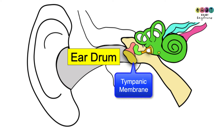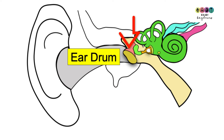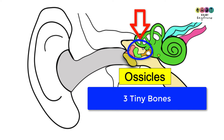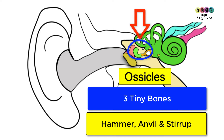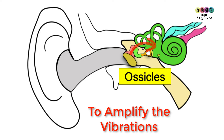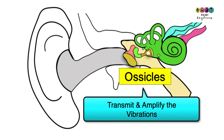At the end of the auditory canal is the eardrum, this thin membrane often referred to as the tympanic membrane. On the back of the eardrum is the first of the three ossicles — the tiny bones inside the middle ear known as the hammer, the anvil, and the stirrup. The role of the ossicles is to transmit and amplify the vibrations from the middle ear to the inner ear.